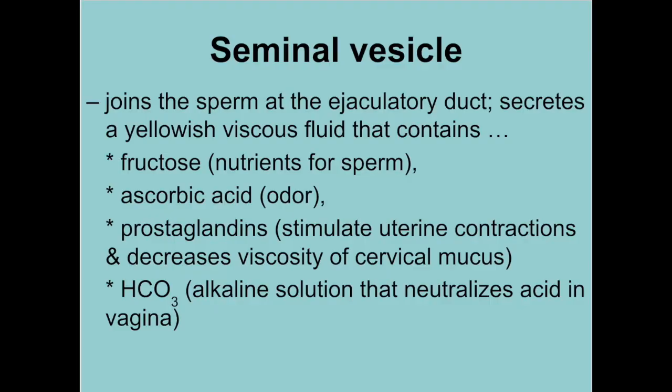The components of semen within the seminal vesicle have several functions. Fructose provides nutrients. Ascorbic acid contributes to the odor. Prostaglandins are hormone-like proteins that stimulate uterine contraction, helping the sperm reach the egg, and they also decrease the mucus inside the vagina — that mucus normally helps prevent bacteria from entering the uterus, which could harm the female or a growing fetus. Another defense within the female reproductive system is an acidic environment that kills bacteria, so the semen helps neutralize that to protect the sperm, which is sensitive to harsh environments.